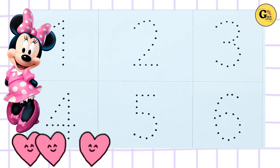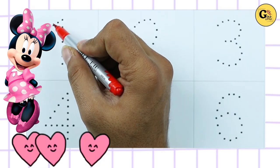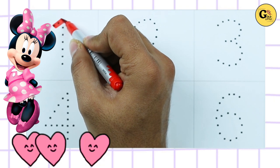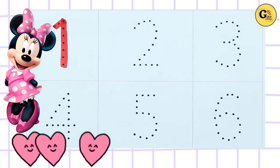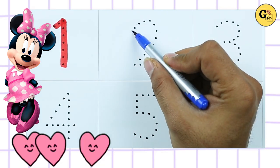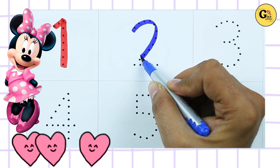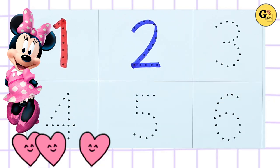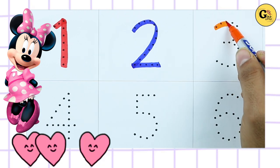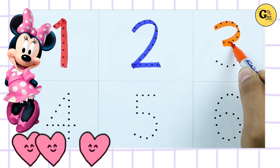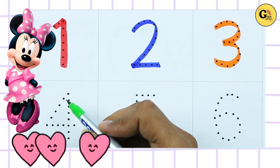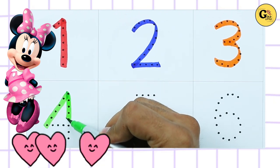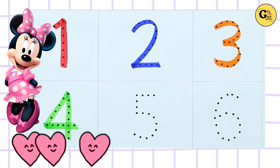Let's start — how to write numbers 1 to 10. It's number one with red color. Number two with blue color. It's number three with orange color. It's number four with green color.